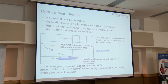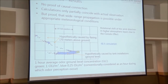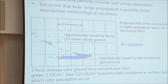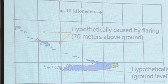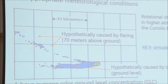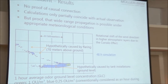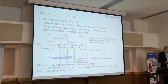Let me draw your attention to another interesting thing. The propagation plume divides into two lines — that's because the emission caused by flaring is released at about 70 meters height, whereas emissions from storage are released at more or less ground level. And we know that wind direction shifts in higher atmospheric layers.